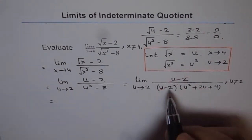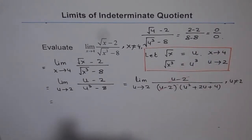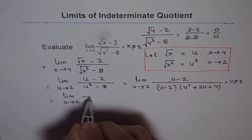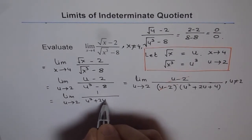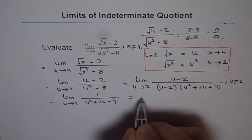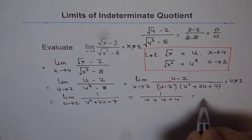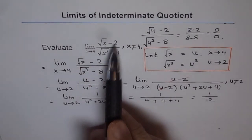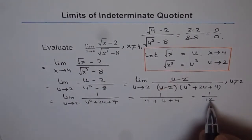Since we have got rid of the factor from both numerator and denominator which was giving us 0 over 0, we can now find the limit by placing u equals 2. So now we have the simplified expression, which is limit of the function 1 over u squared plus 2u plus 4, where u approaches 2. If I plug in 2 in this function, we get 1 over 2 squared is 4, plus 2 times 2 is 4, plus 4. That gives us 1 over 12. Therefore, we can say the limit of square root of x minus 2 divided by square root of x cubed minus 8, where x approaches 4, is 1 over 12.